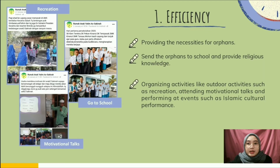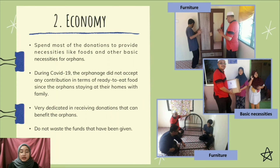Second is economy. Organizations like Roma Anak Yatin Asakina usually receive funds from donations. They fully utilize these funds by spending most of the money on food and other basic necessities for orphans, like wardrobes and beds. The organization is dedicated to receiving donations to benefit the orphans. For example, during the pandemic, the orphans did not accept ready-to-eat food since they were not staying in a hostel but with their families. Instead, they accepted contributions like cash or dry foods.